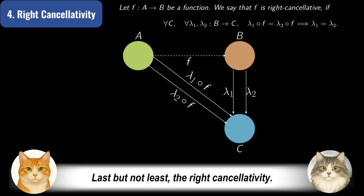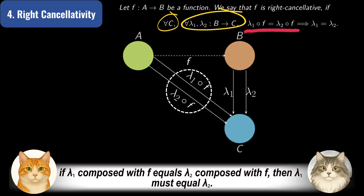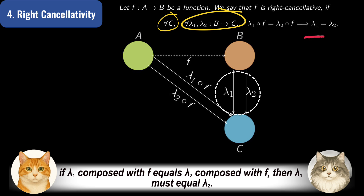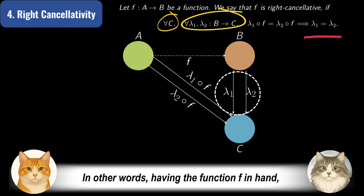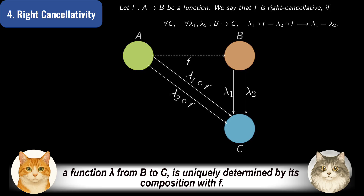Last but not least, right cancellativity. This property claims that for any set C and any two functions λ₁ and λ₂ from B to C, if λ₁ composed with f equals λ₂ composed with f, then λ₁ must equal λ₂. In other words, having the function f in hand, a function λ from B to C is uniquely determined by its composition with f.